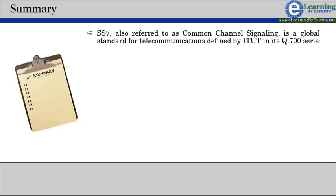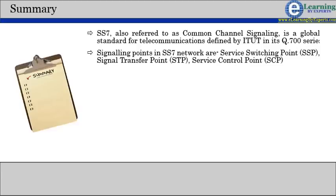Nodes in the SS7 signaling network are called signaling points. Three types of signaling points are defined: Service Switching Point, SSP,